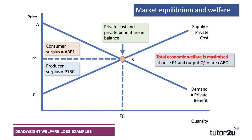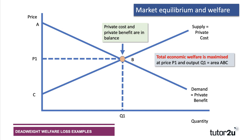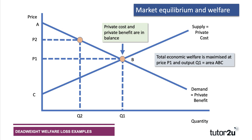So when a free market is in equilibrium, economic welfare is maximised — we maximise the area of consumer and producer surplus. If we're not at equilibrium, this brings into play the idea of a deadweight loss. It happens when the market is not at equilibrium or when market prices don't fully accurately reflect the social costs and social benefits of production and/or consumption — in other words, there's a market failure. This market is in equilibrium and the total welfare is ABC, adding together consumer plus producer surplus. Let's choose an output Q2 which is not an equilibrium. Output Q2 is not, and we might charge price P2 for that because we've shrunk the supply from Q1 to Q2.